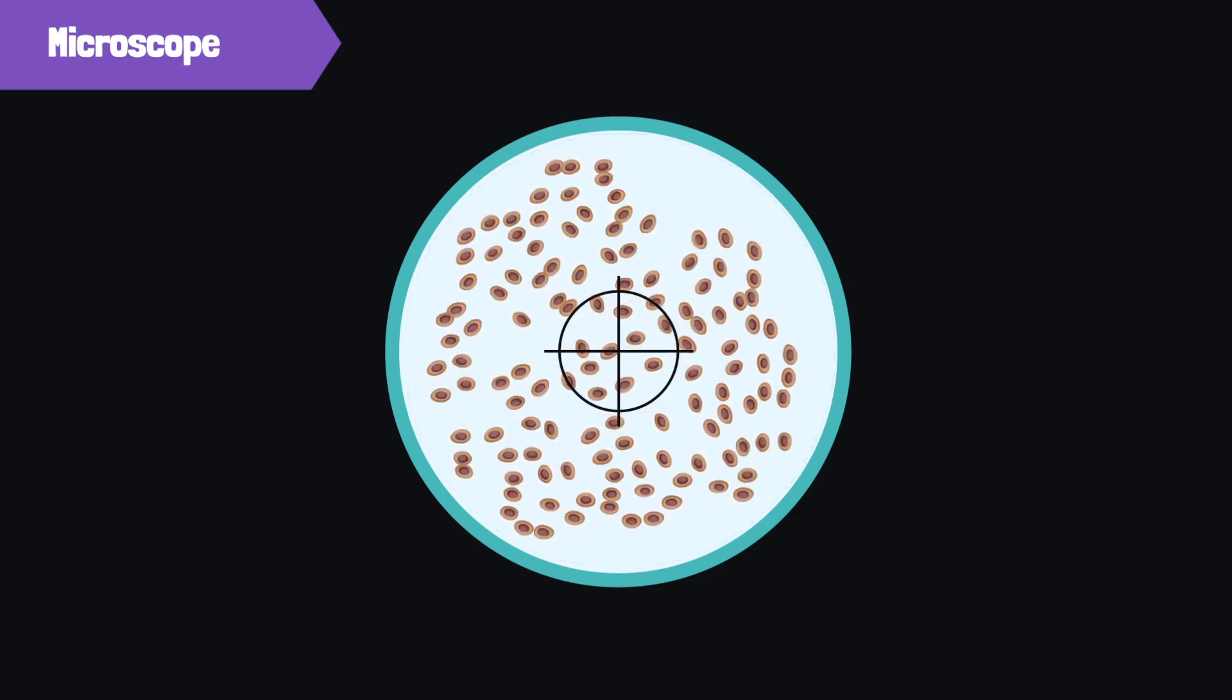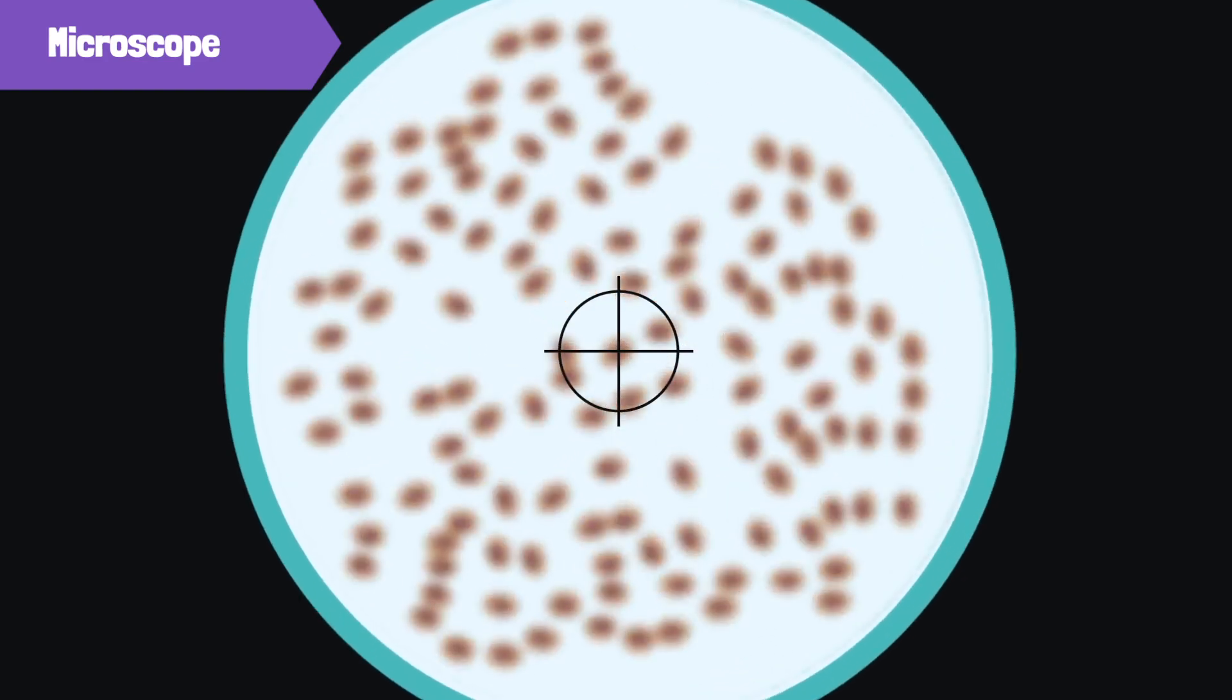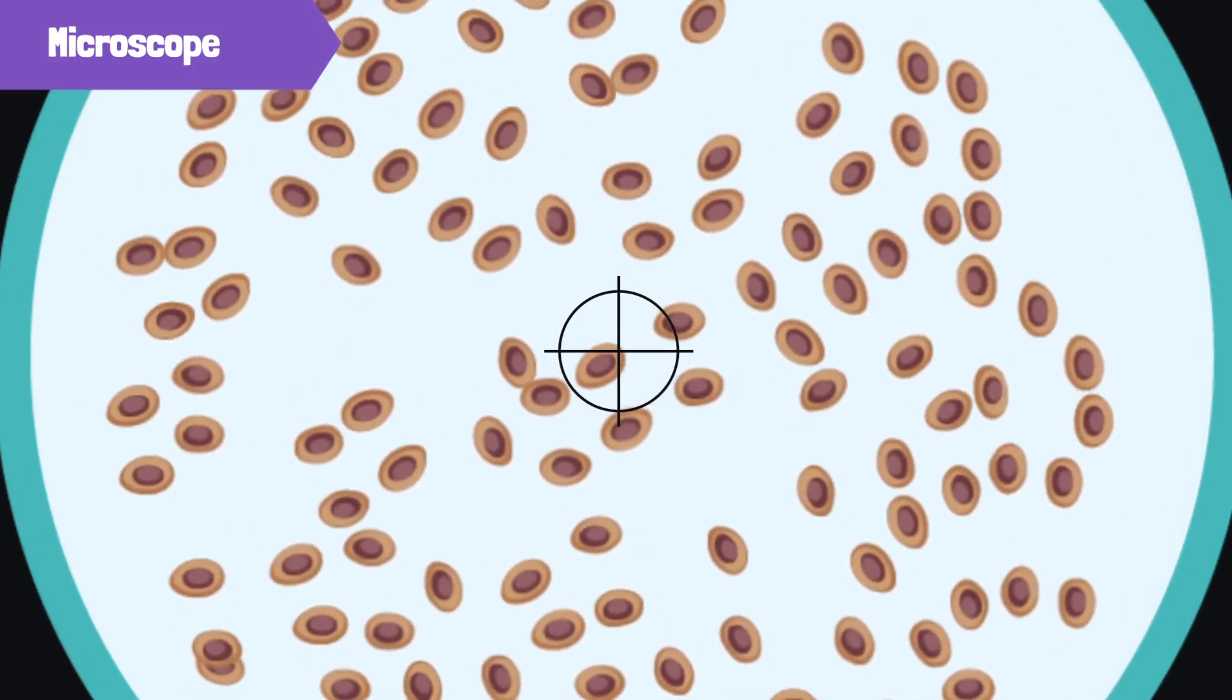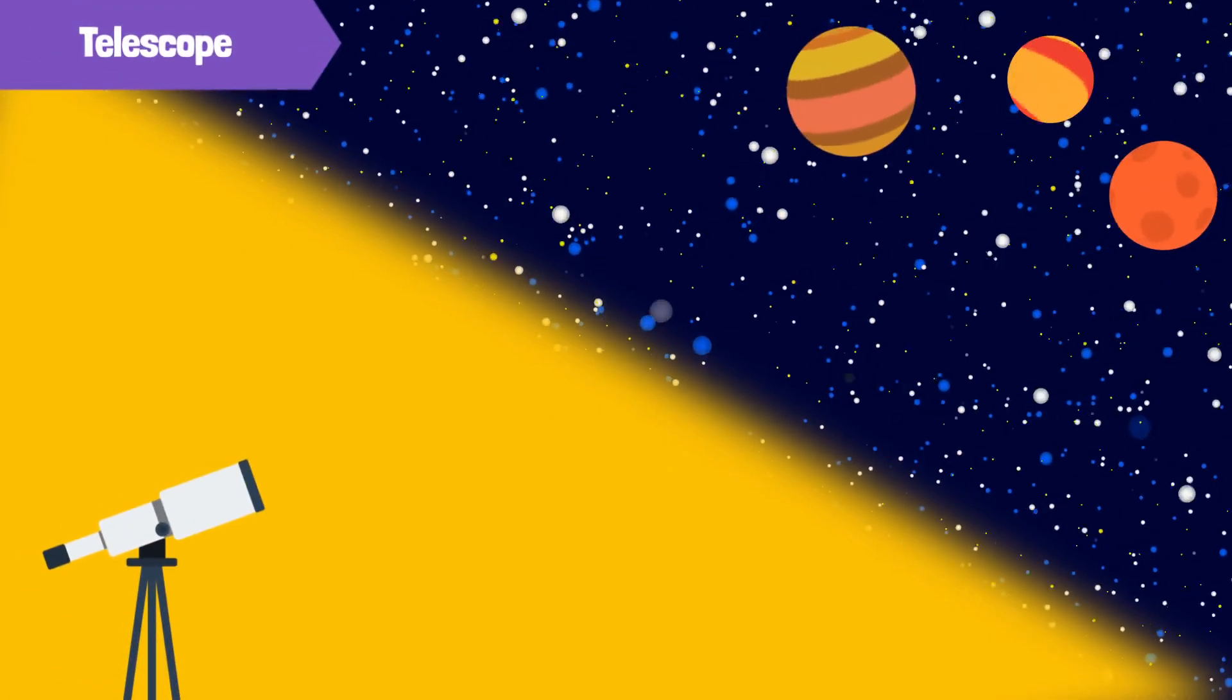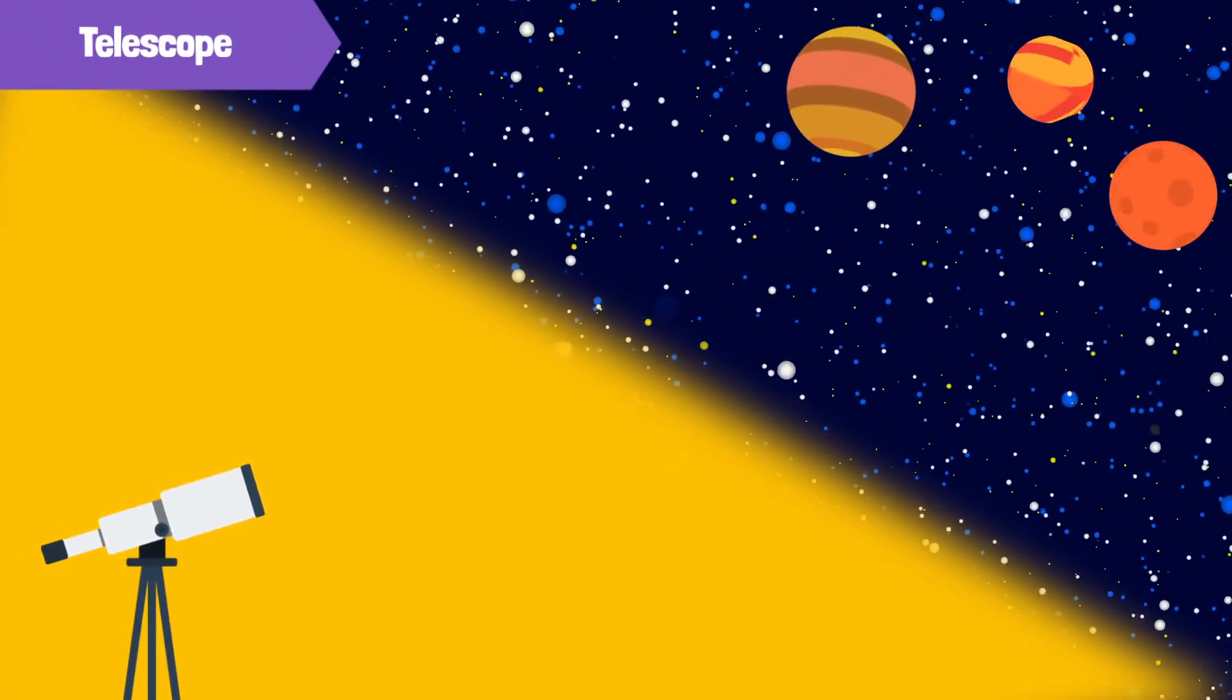Most compound microscopes can magnify an object by 10, 20, 40, or even 100 times. But where a microscope allows us to see really small things, a telescope allows us to see things that are far away, even out of this world.